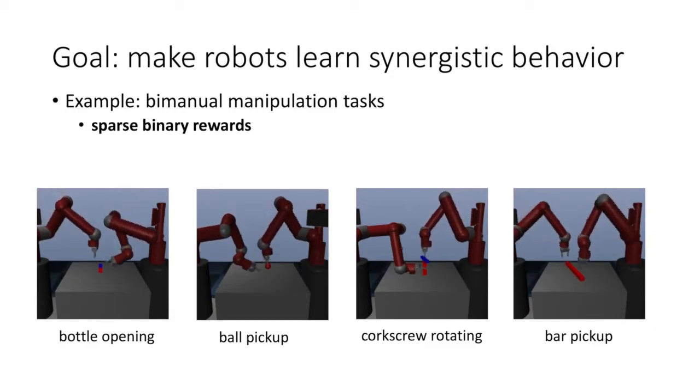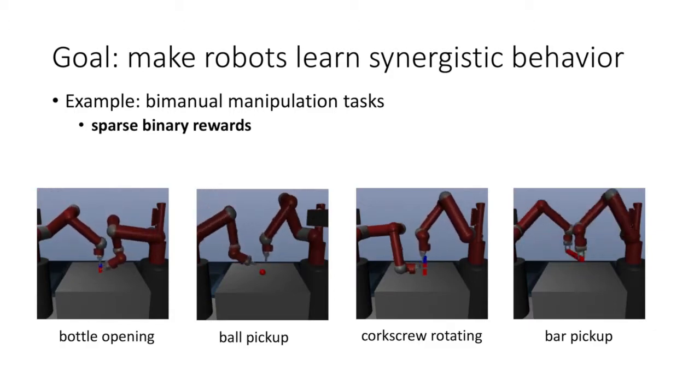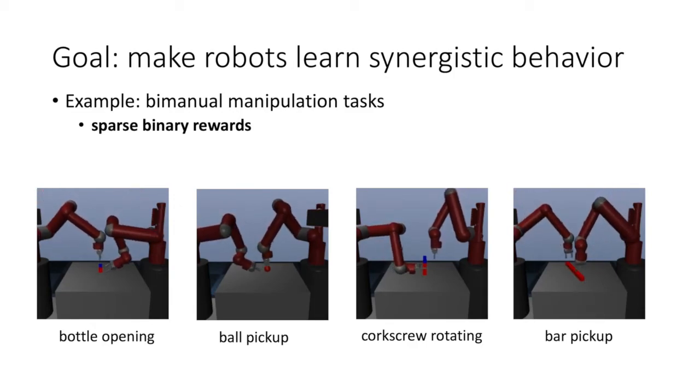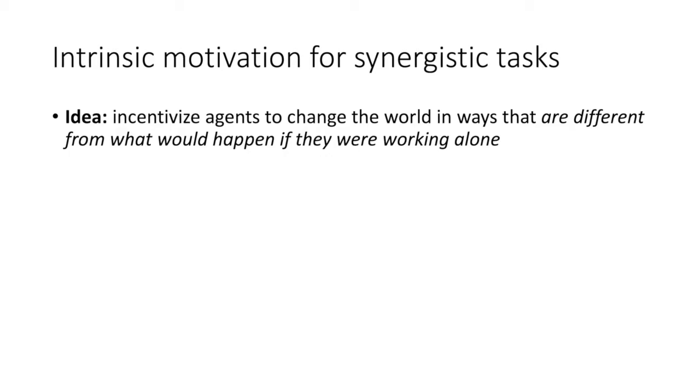Our formulation allows us to solve robotic bimanual manipulation tasks which are designed to require synergy between the arms. Our key idea is that to achieve synergy, agents should prefer actions which affect the world in ways that would not be achieved if they were acting alone.